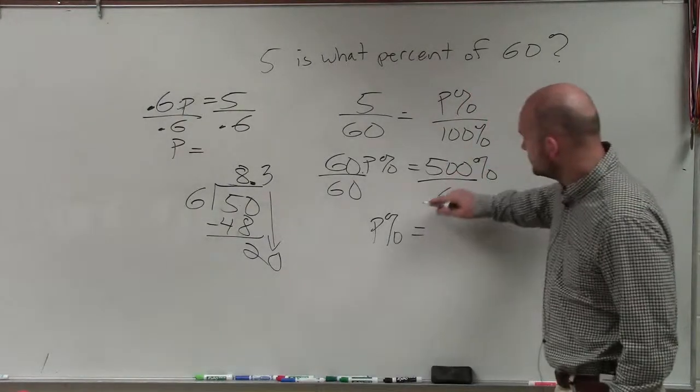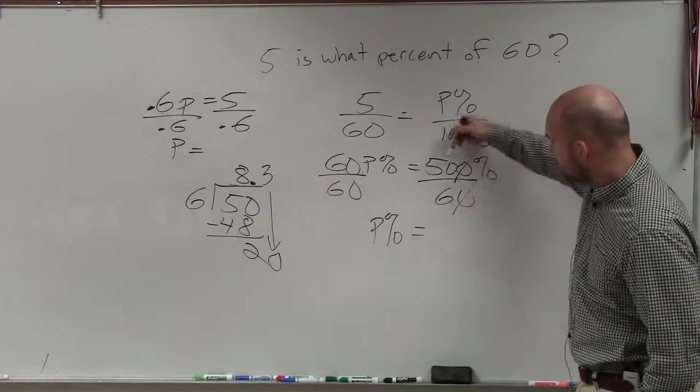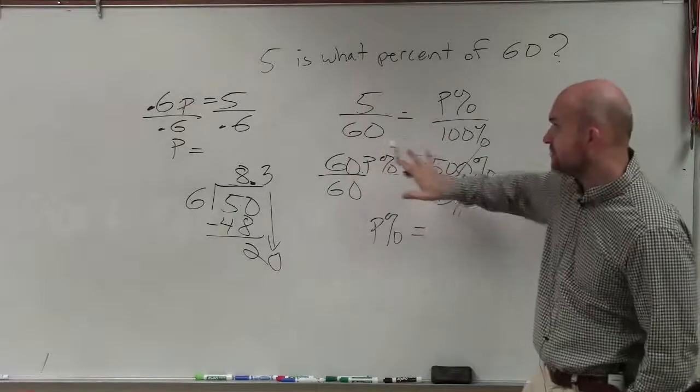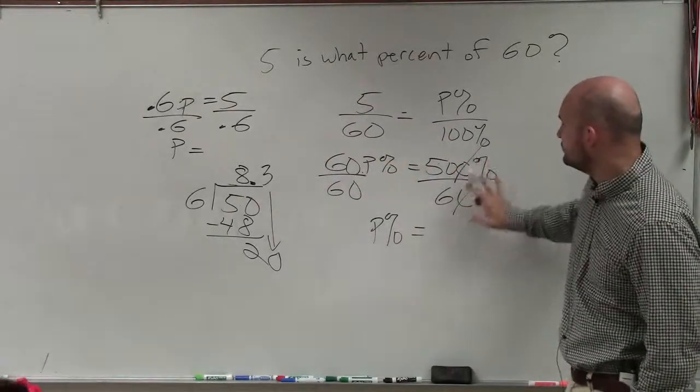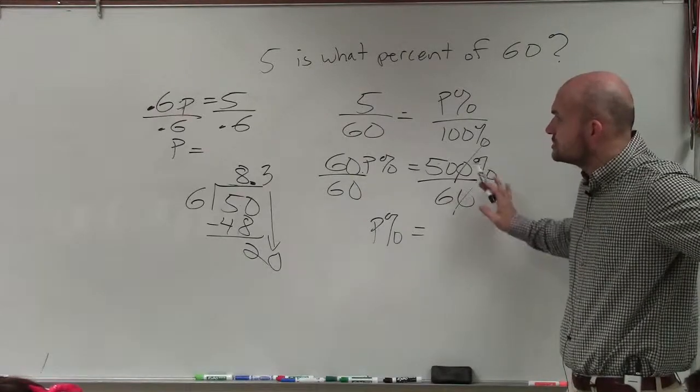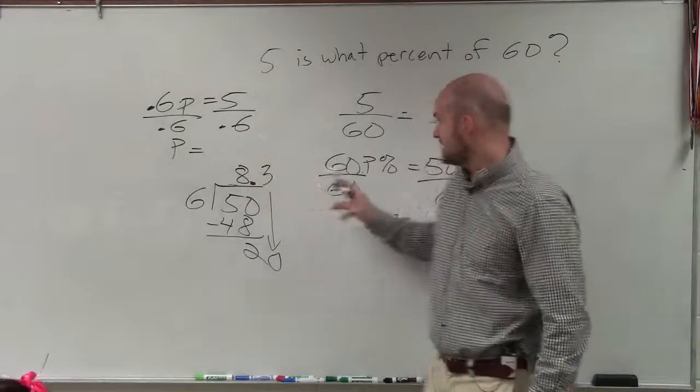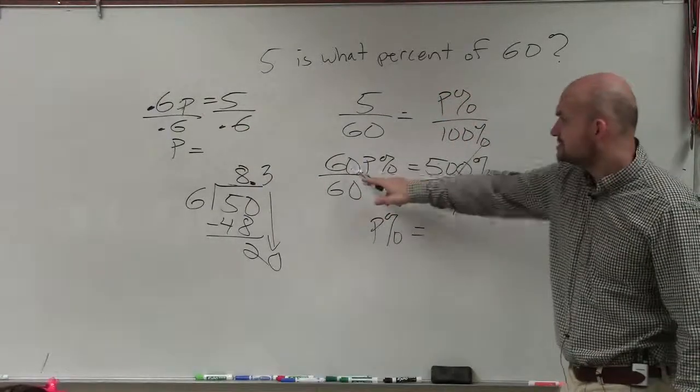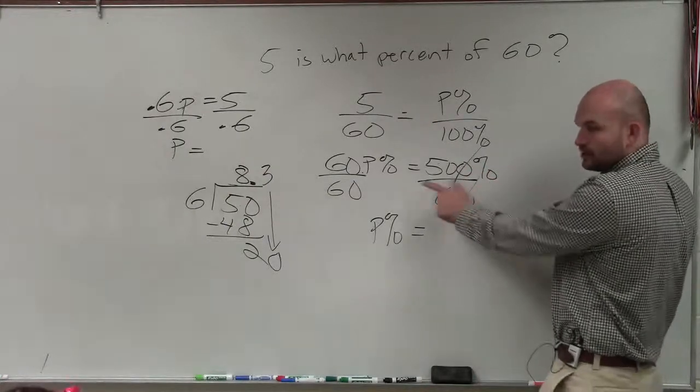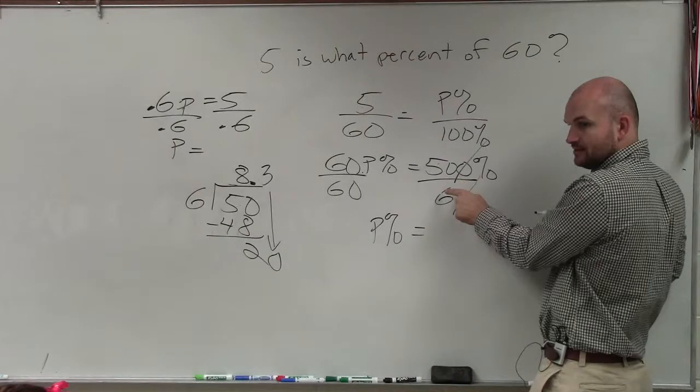All I did—you can just divide out the zeros, right? So basically what this is is 50 divided by 6. Or if you just converted this instead of using percentages, you could also divide by 100 and write them as decimals. So this would be the exact same thing as this equation. 60p% equals 500. If you just divided by 100 on both sides, you would have 0.6p equals 5, right?